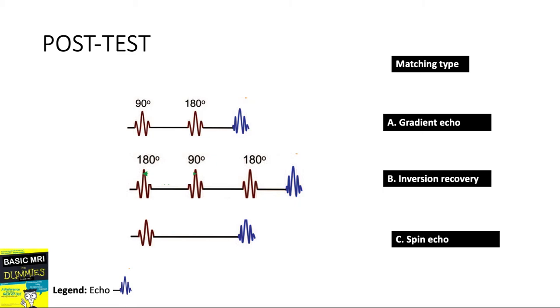Questions 3 to 5, the matching type. In this sequence we have the 90 degree pulse followed by the 180 degree refocusing pulse then the echo. This is what we call the spin echo.